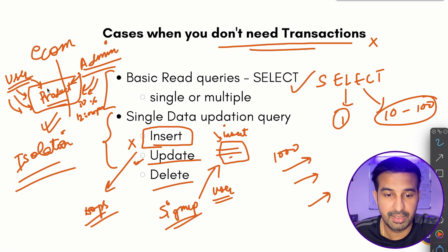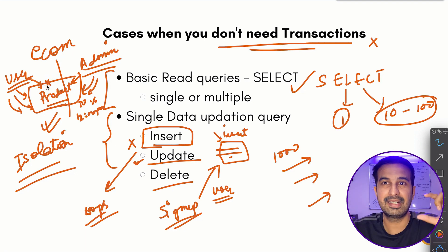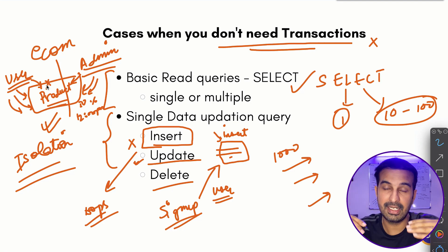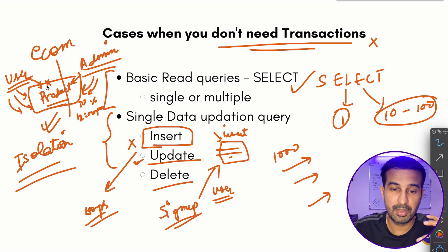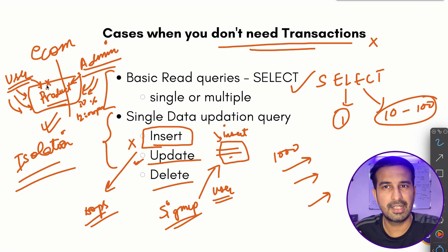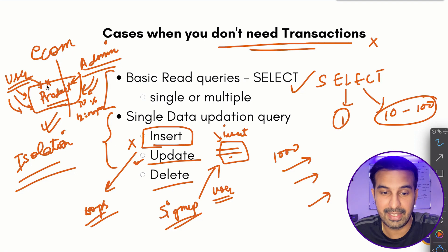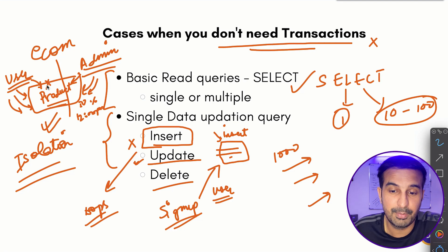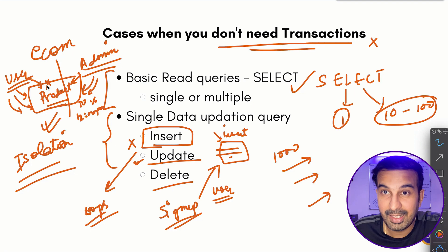For such cases, even single updates should be done in a transaction, because when a transaction starts executing, it takes a lock on the data it is affecting. If another SQL query tries to affect that same data, the database will return an error indicating an existing operation is ongoing. Isolation is a very important aspect of database transactions that you should always keep in mind.